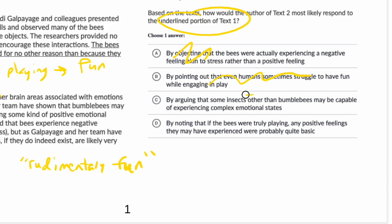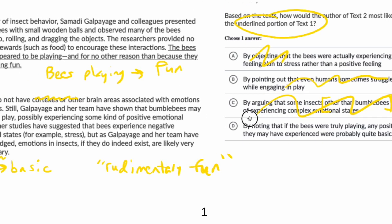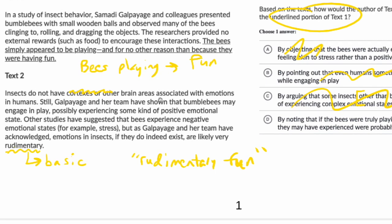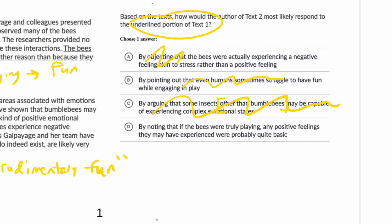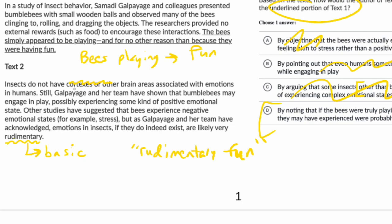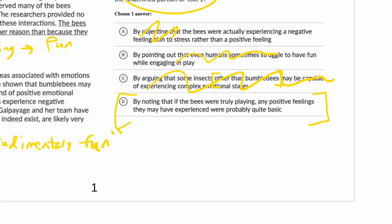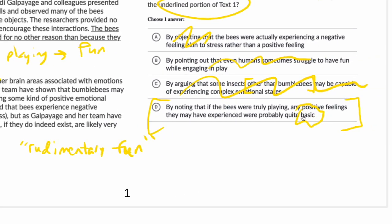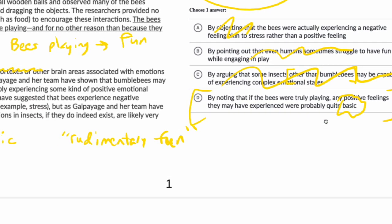You also want to be wary when the answer shifts the topic to insects other than bumblebees — there's nothing in the passages about other insects and nothing we could use to make any inference there. So the correct answer is: noting that if the bees were truly playing, any positive feelings were probably quite basic. That's the connection — 'rudimentary' maps to 'basic.' We don't expect the exact same word, but we want a keyword mapping between the passage and the answer choice.